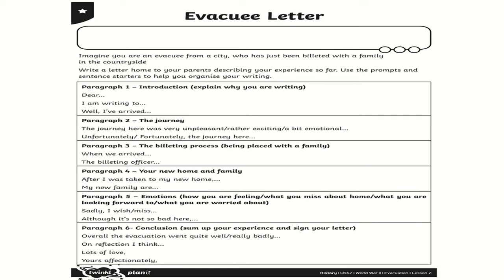Think about what kind of journey you had. Here are some sentence starters to help you: 'The journey here was very unpleasant,' 'could have been rather exciting,' 'a bit emotional,' 'Unfortunately' or 'Fortunately.' Remember, I want you to use your literacy skills — we've learnt about a variety of sentence openers, so don't forget those commas after them. Think about your relative clauses: those comma-who, comma-which, comma-where, comma-when sentences. Try to get some of those in as well, along with some really good vocabulary, because we're very good at that in class O.